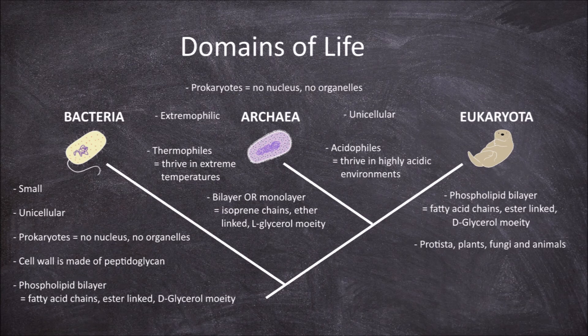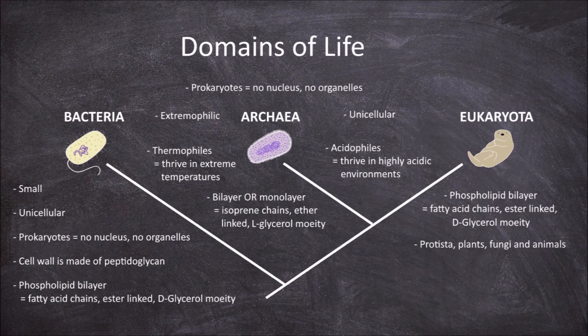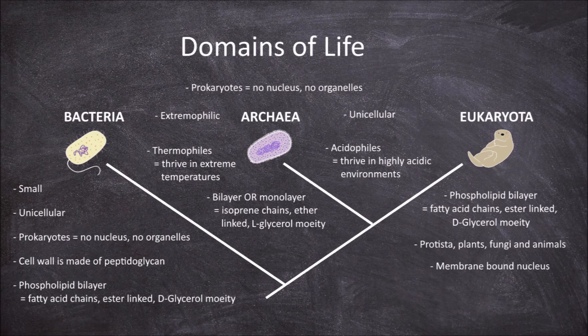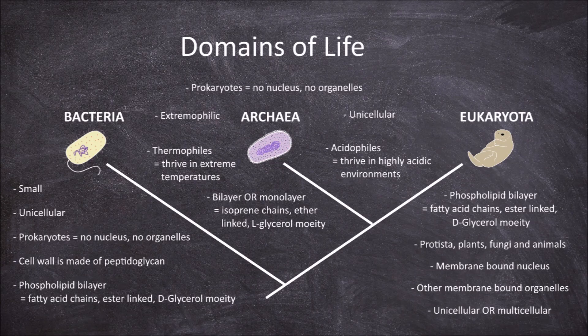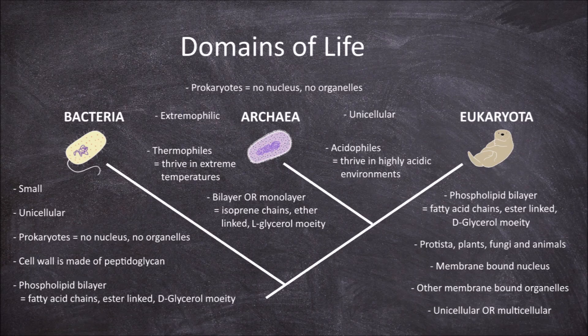The main characteristic that differentiates the eukaryota from members of the other two domains is that they all have a membrane-bound nucleus within their cells as well as other membrane-bound organelles. They may be single celled or multicellular, but all cells including the single cell of single celled eukaryotes have a nucleus and other membrane-bound organelles.